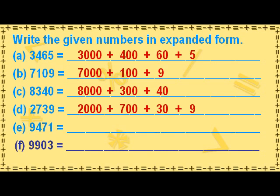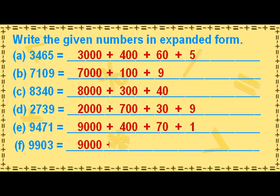The number 9903 can be written in expanded form as 9000 plus 900 plus 3.